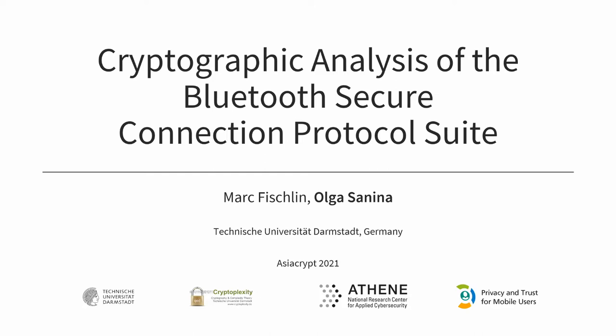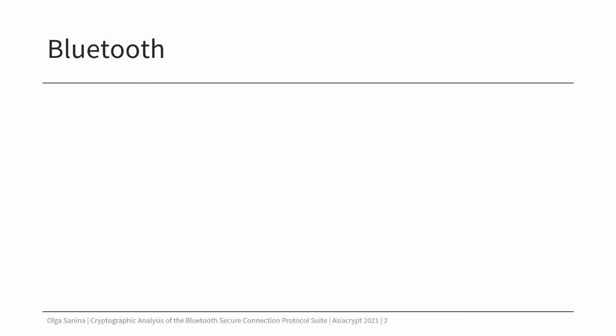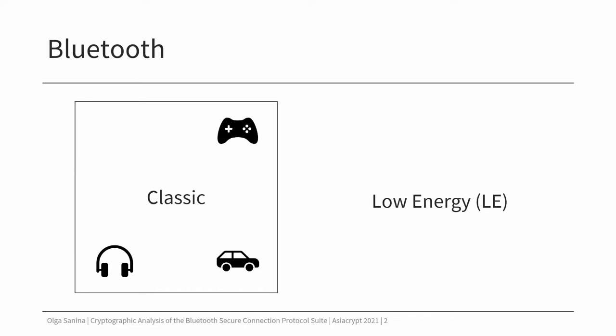If you are watching it using Bluetooth devices, this might be the right video for you. You probably heard about Bluetooth low energy in the light of contact tracing, but this is one of the modes in Bluetooth. Bluetooth technology comes in two different variants, classic and low energy. Bluetooth classic is used for connections with continuous data streams like headphones, controllers, cars.